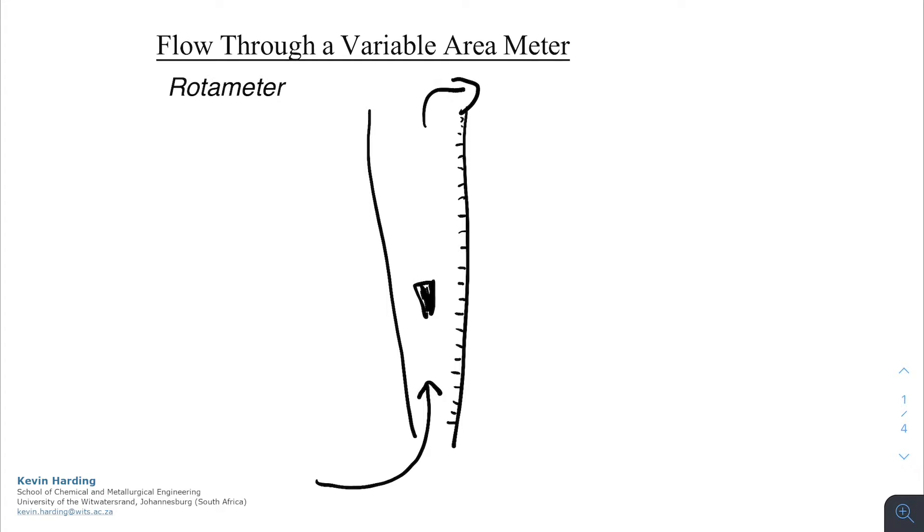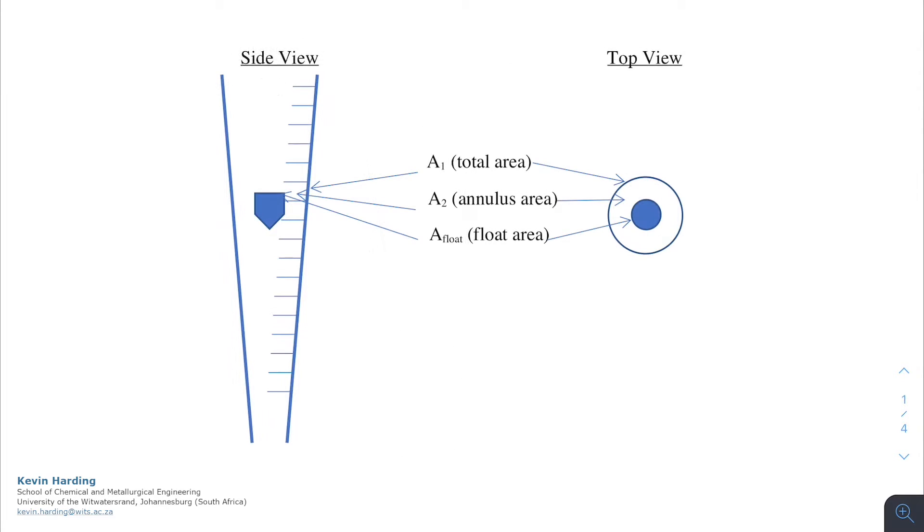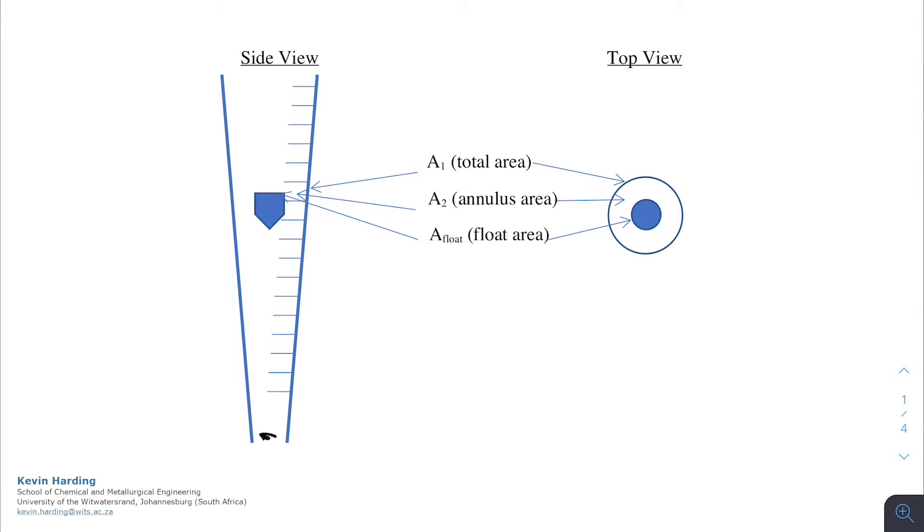We can then read the marks off the side and get the flow rate from this meter. If we look at a neater version, you'll see the smaller diameter at the bottom versus the bigger diameter at the top in the side view.